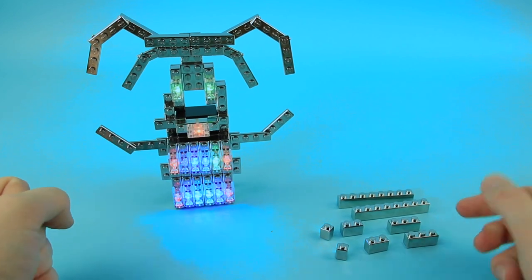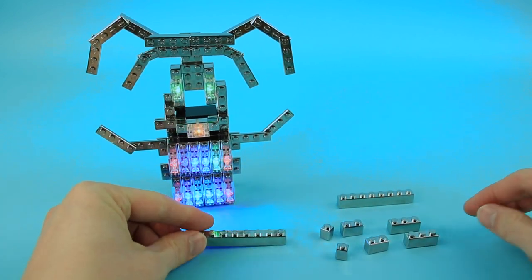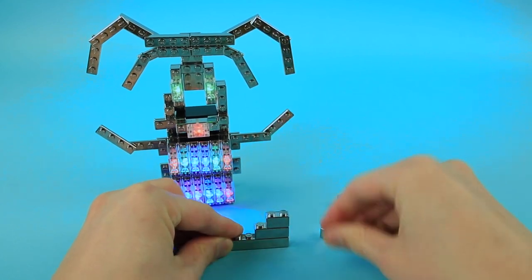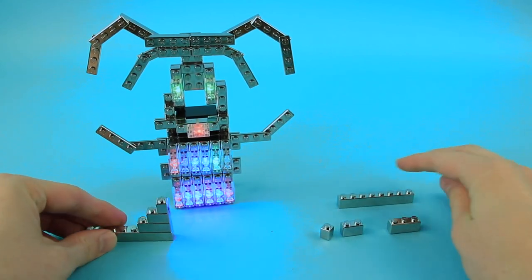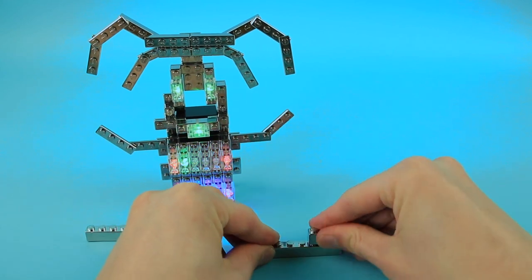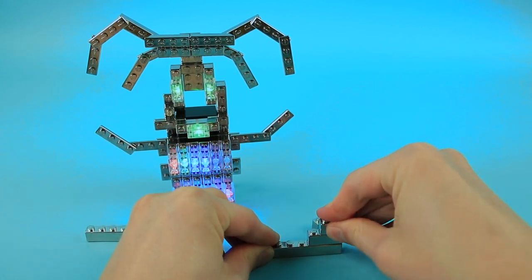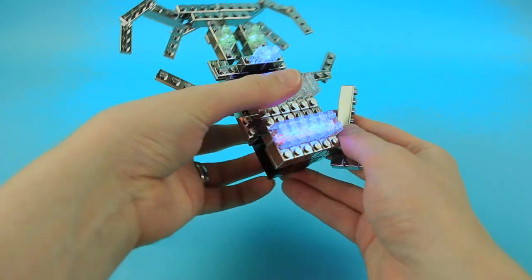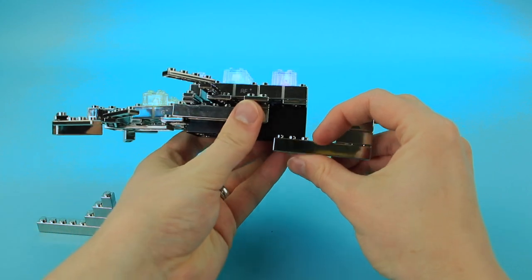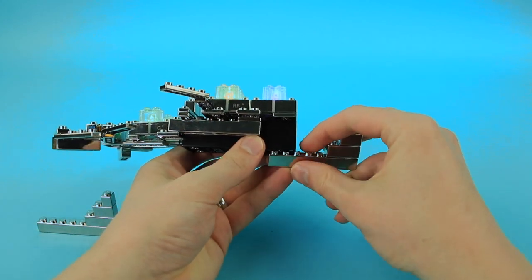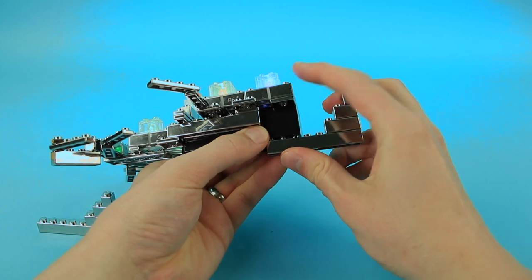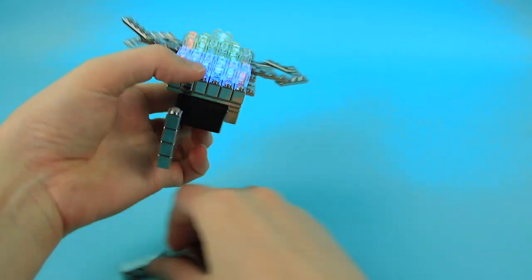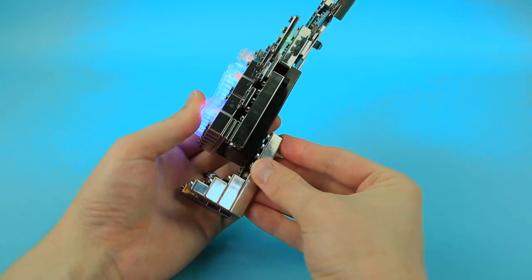Then for the legs, take a 1x8, 1x3, 1x2, and 1x1 brick. Build two of those. So another 1x8, 1x3, 1x2, 1x1 brick. And these are going to connect to the bottom of the battery box. Three studs will overlap from the leg to the battery box. So do one on this side and one on the other side.